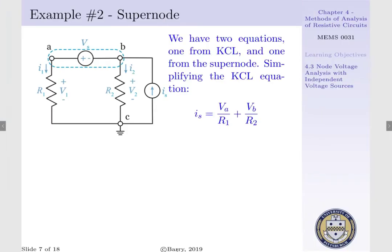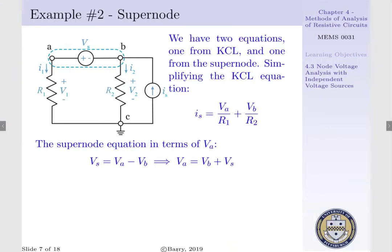Simplifying our KCL equation, we have Is is equal to Va per R1 plus Vb per R2. Our supernode equation in terms of our node voltage at A can be expressed as Va is equal to Vb plus Vs.